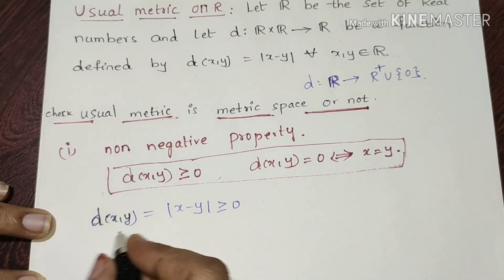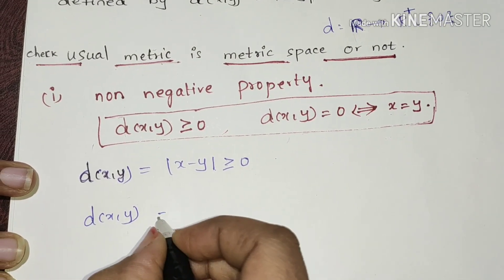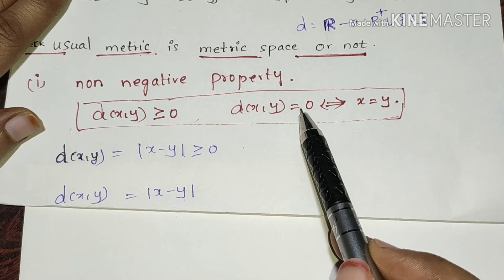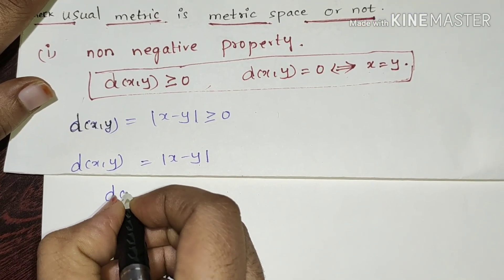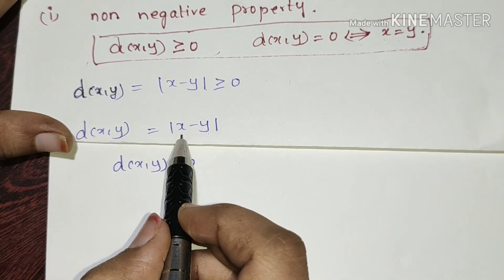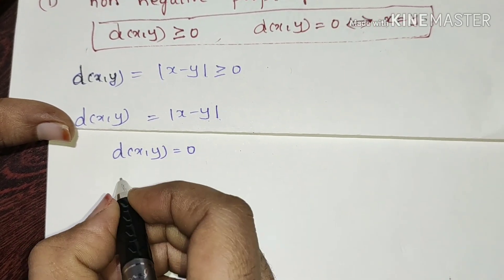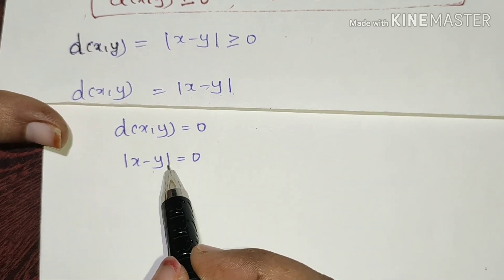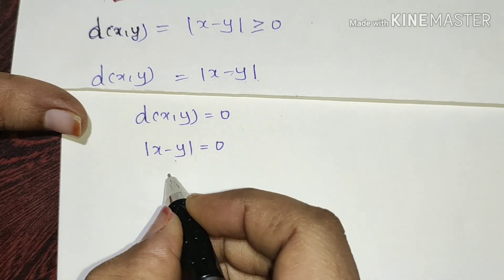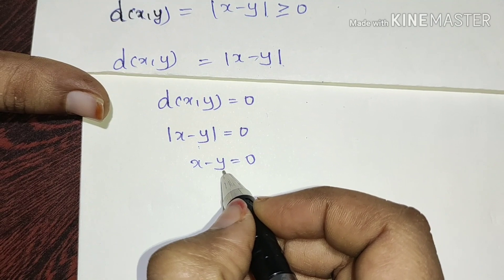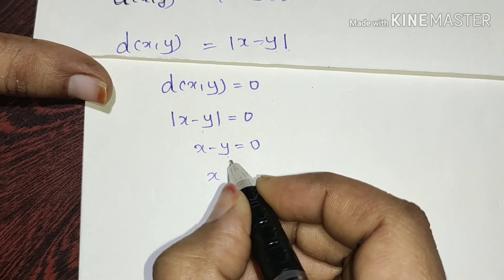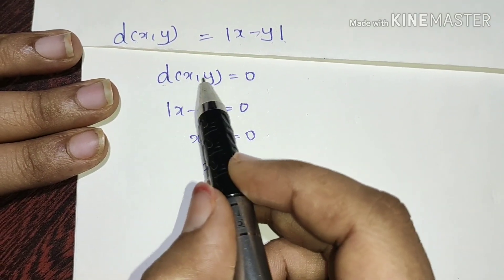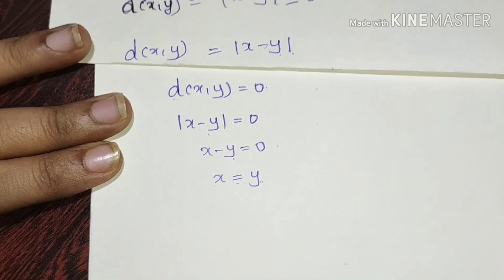We take the definition of the condition and choose the equal to zero condition. The second condition is: distance of x, y is equal to zero, and we will prove x is equal to y. We consider distance of x, y equal to zero, so modulus of x minus y equals zero, giving us x is equal to y. So we can satisfy this key condition.